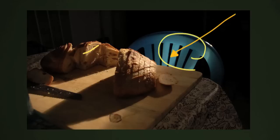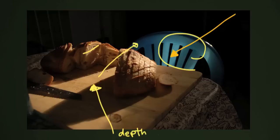What happens when you have an angle of light that's this extreme is it often adds depth to the image and can give it a deeper feeling and more texture as well.